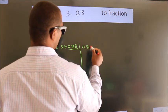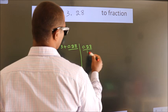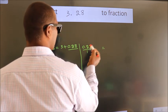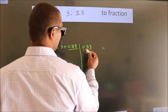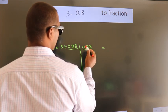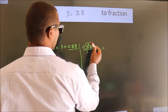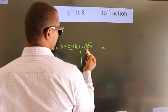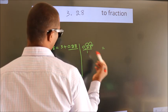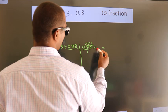So 0.28. To convert this to fraction we have to move this decimal after two numbers. For that multiply it with 100.